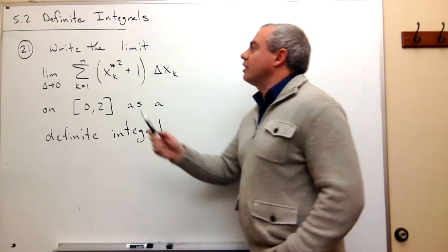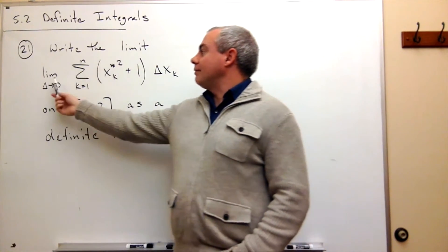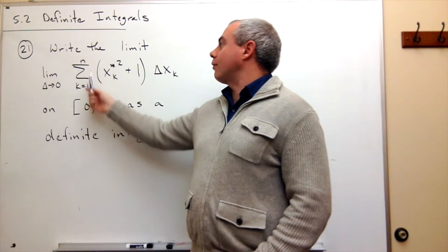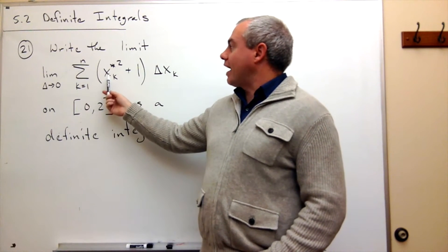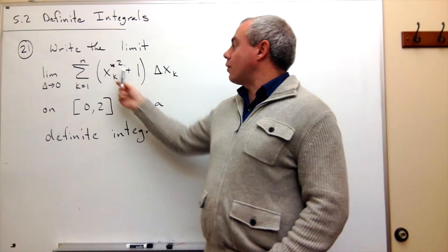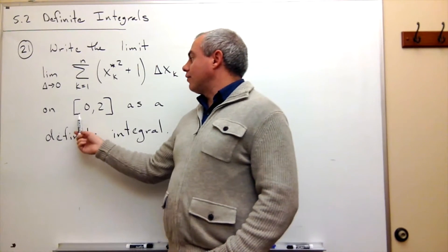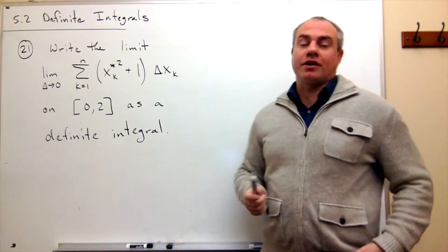In problem number 21, we'd like to write the limit as delta goes to 0 of the sum k going from 1 to n of x sub k star squared plus 1 delta x sub k on the interval 0 to 2 as a definite integral.